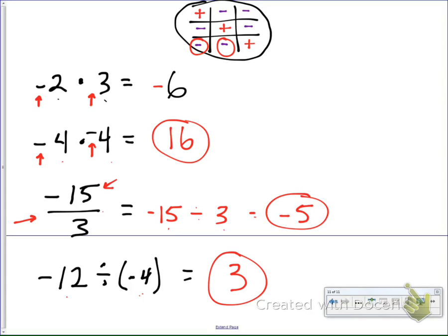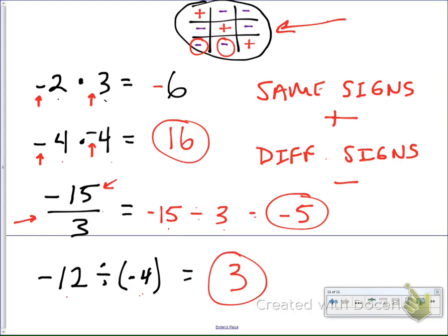A good way to remember with your multiplication and division is that if your signs are same, so same signs, your answer is going to be positive. Always. With multiplication and division only, so don't get it for addition and subtraction, but same signs gives you a positive. If I have different signs, that's always going to give me a negative. So it's an easy little rule to remember. You treat your numbers just like normal, but when you're looking for what sign your answer should be, same signs are positive, different signs are negative. And again, this little tic-tac-toe chart is always a great help.